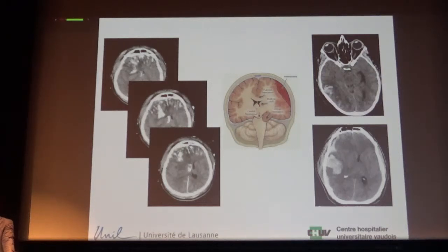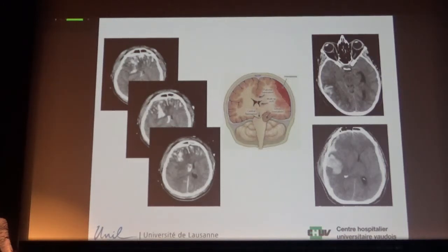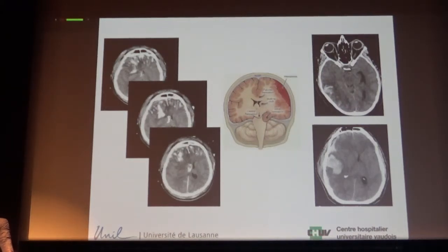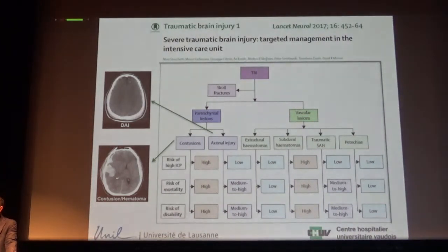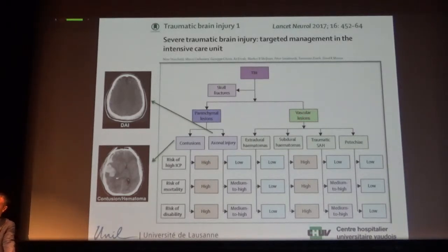For patients with secondary brain injury admitted for other reasons — heart surgery, severe infection — you may want to perform a CT scan or even MRI to exclude secondary lesions, especially in the presence of focal signs. This paper published in Lancet Neurology is an example based on severe traumatic brain injury.